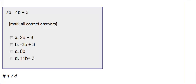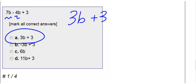Okay, here we're combining like terms. So I have 7B minus 4B plus 3. So our B's are the same. If I have 7B minus 4B, that gives me 3B. I still have plus 3. I can't combine those together because they're not the same, therefore I get choice A.